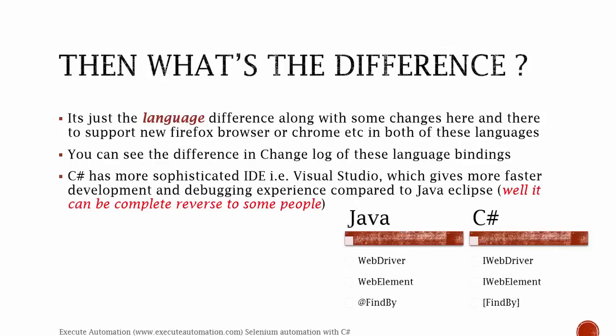The difference between the languages comes down to naming conventions. In Java, the interface WebDriver is called just WebDriver, whereas in C Sharp we call it iWebDriver. Similarly, in Java we call it WebElement, whereas in C Sharp it's iWebElement. In C Sharp, the convention for interfaces is to prefix the letter 'i' before the interface name — that's it, and those are the only name changes.